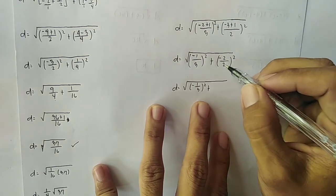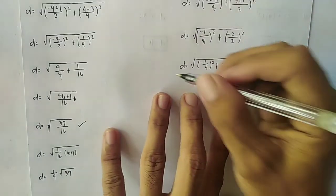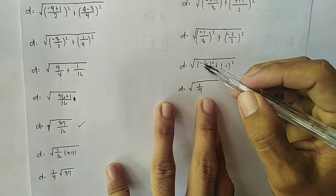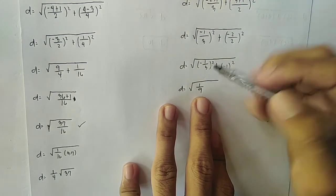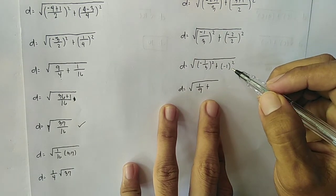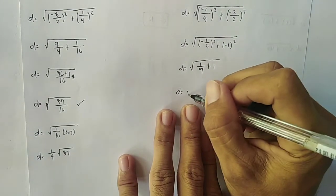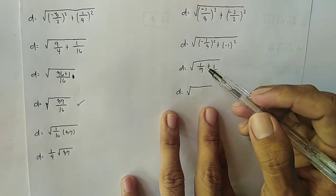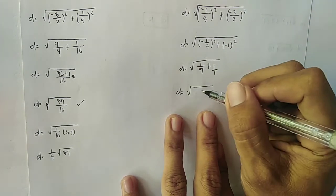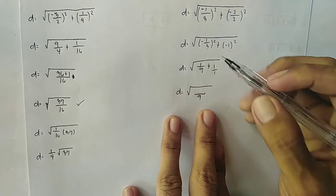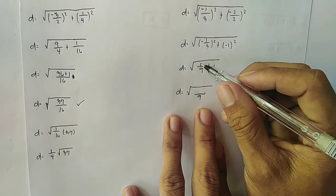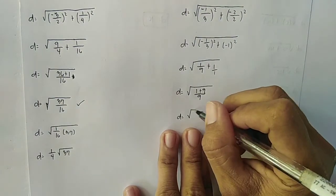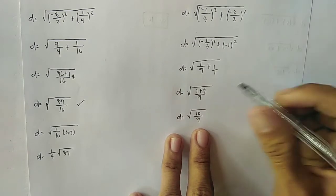We can simplify -2/2 to -1. So D equals the square root of (-1/3)² plus (-1)². Squaring: (-1/3)² is positive 1/9, and (-1)² is positive 1. Now we add 1/9 plus 1. Since 1 is over 1, they have unlike denominators, so get the LCD of 9. Then: 9 ÷ 9 = 1, times 1 = 1; and 9 ÷ 1 = 9, times 1 = 9. So D equals the square root of (1 + 9)/9 = √(10/9).